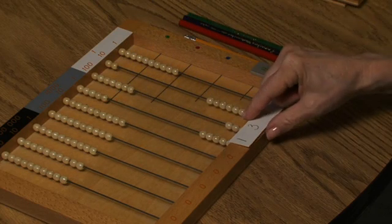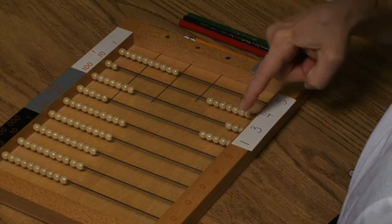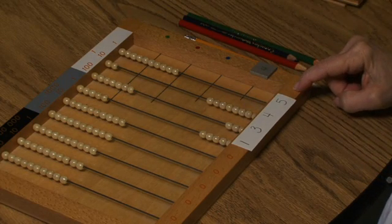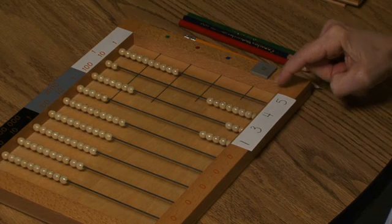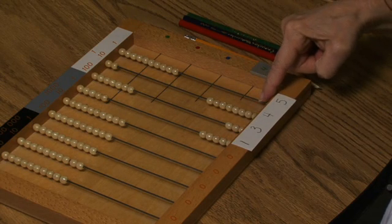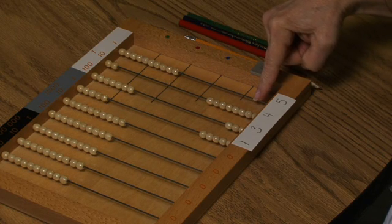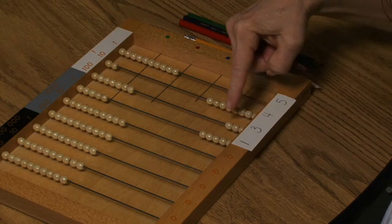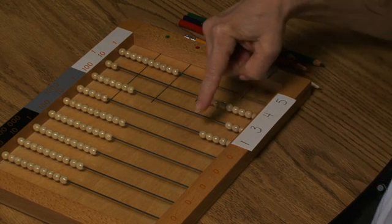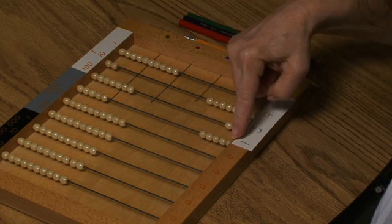And I read my product, 1,345 taken 4 times right here from the beads. There are 0 units, 8 tens, 3 hundreds, 5 thousands. So I read, 5,380.